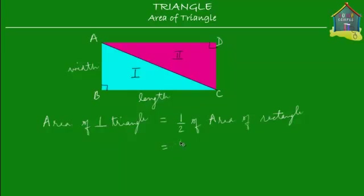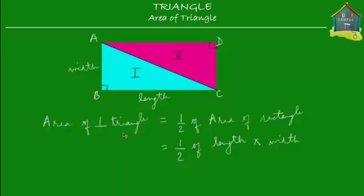So there you go. Half of the area of the rectangle — what is that? Well, it's half of the length BC times the width AB. Length times width is the area of the rectangle, and half of length times width is the area of triangle ABC.